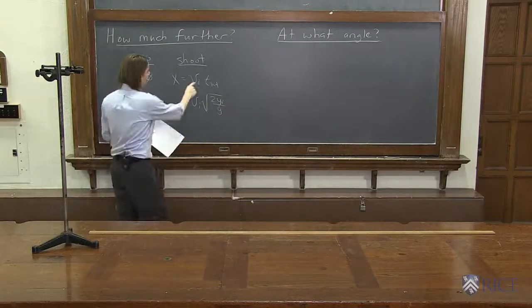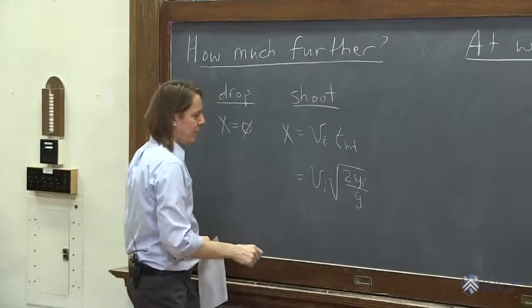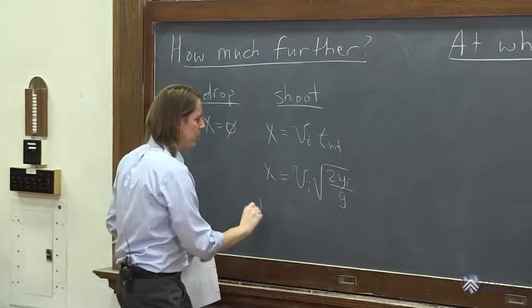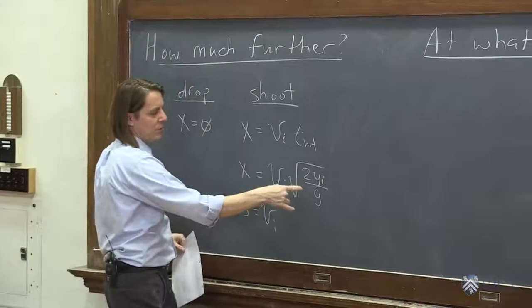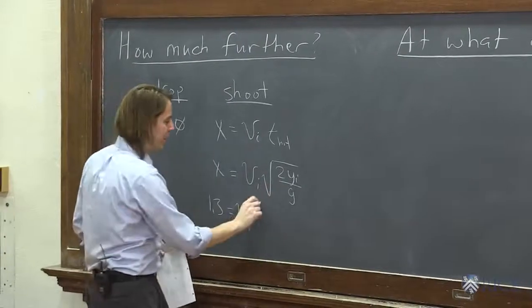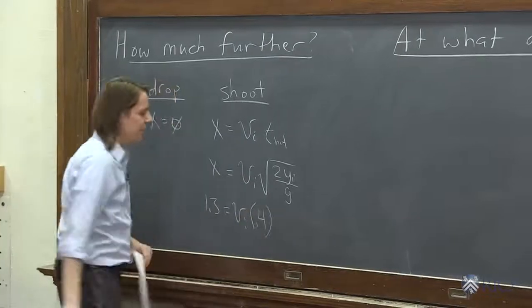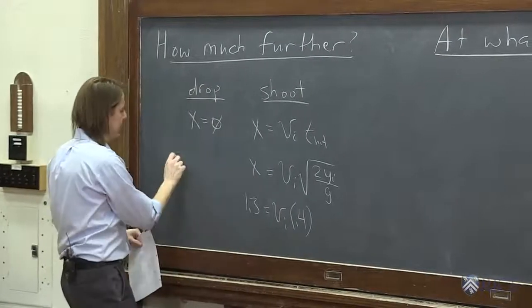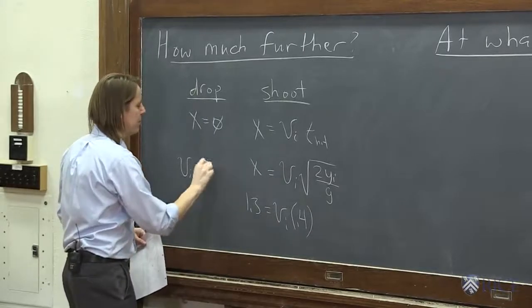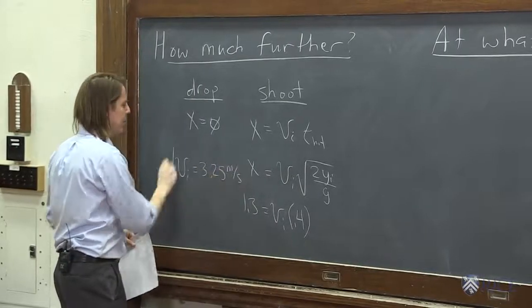For fun, let's calculate the initial velocity. So if this is 1.3 meters vi, and this was 0.4 seconds, we did that last time. So in the end, you get that the initial velocity was 3.25 meters per second.